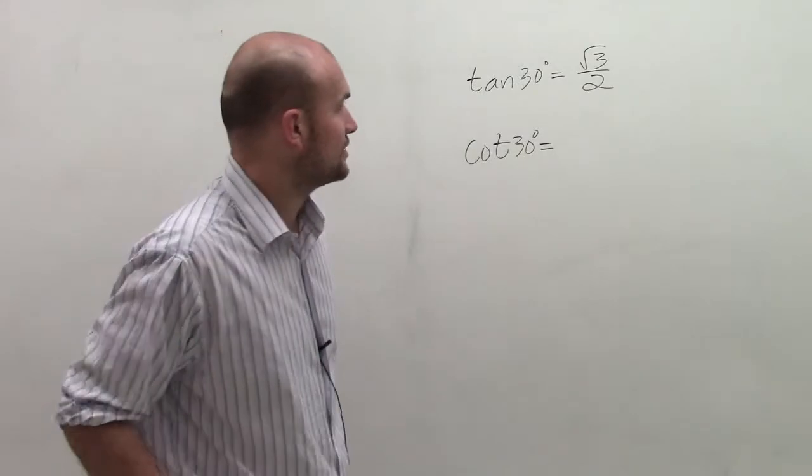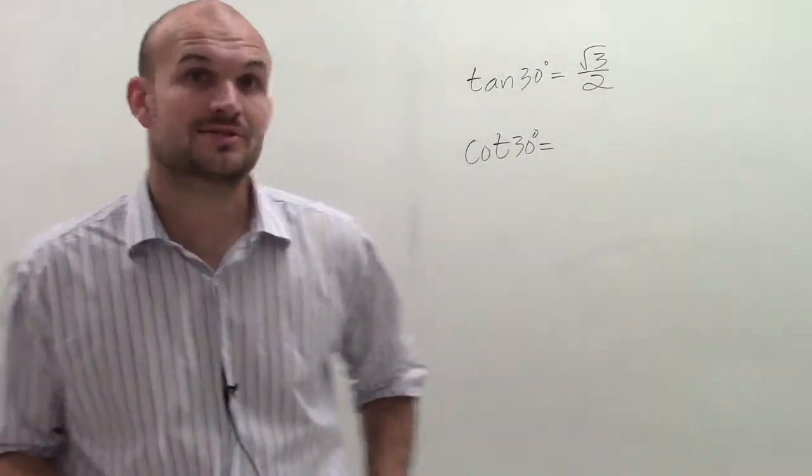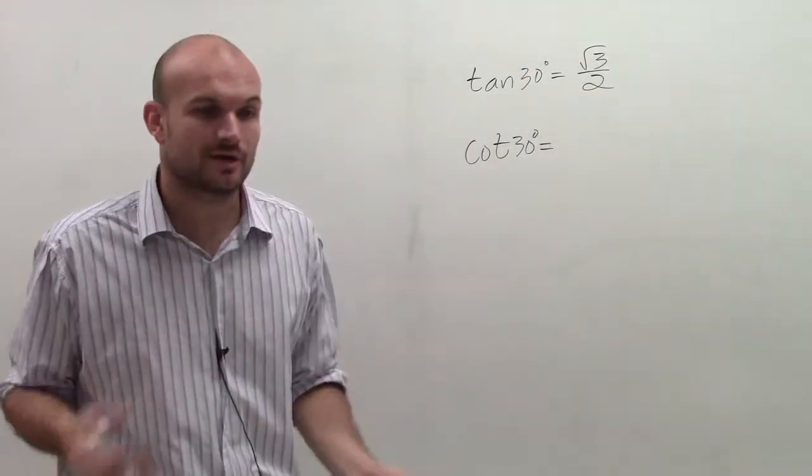All right, welcome. What I have is a tangent of 30 degrees equals square root of 3 divided by 2. And what I want to determine is the cotangent of 30 degrees.